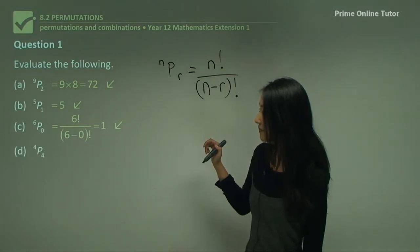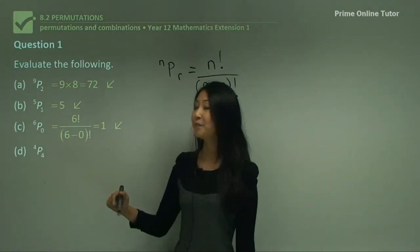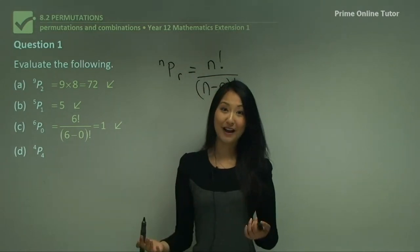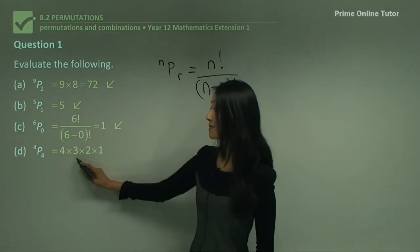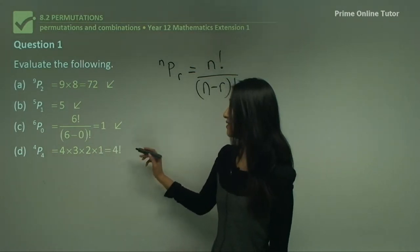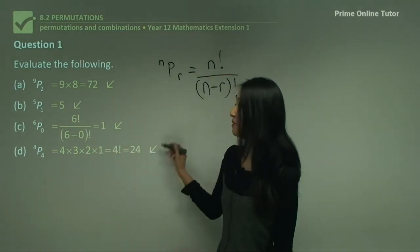What about ⁴P₄? That means it'll be 4 factorial and I want all four numbers, so that'll be 4×3×2×1, which gives you the same as 4 factorial, which equals 24.